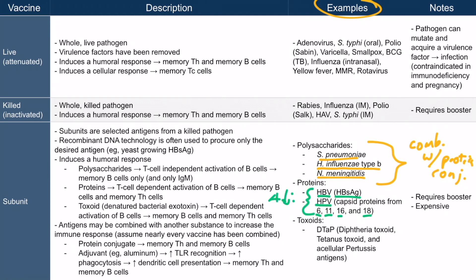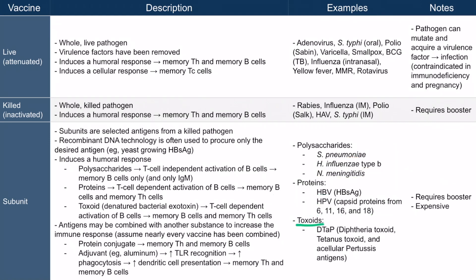Now let's move on to the toxoid examples. The prime example of a toxoid vaccination is the DTaP. The capital D stands for diphtheria toxoid, the T stands for tetanus toxoid, and the lowercase a and capital P stand for acellular pertussis — in other words, there's a lot of protein in this vaccine to stimulate a strong immune response.